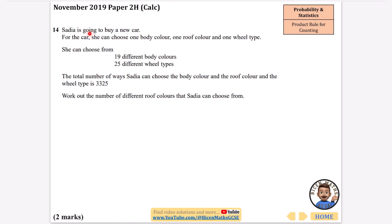Sadia is going to buy a new car. For the car she can choose one body color, one roof color and one wheel type. She can choose from 19 different body colors, so I know that's 19. She's got one roof color - we don't know how many roof colors so I'm going to call that N - and there are 25 different wheel types. The total number of ways Sadia can choose the body color, roof color and wheel type is 3,325. Work out the number of different roof colors that Sadia can choose from.